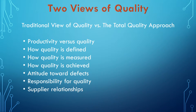Two views of quality: the traditional view versus the total quality approach. In the traditional view, productivity and quality are always in conflict, and you cannot have both. The total quality view states that lasting productivity gains are made only as a result of quality improvements. There is also a difference in how quality is defined. The traditional view is that quality means merely meeting customer expectations, while the total quality view is that quality means satisfying customer needs and exceeding customer expectations.